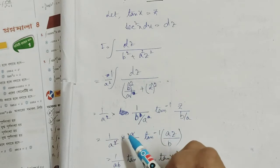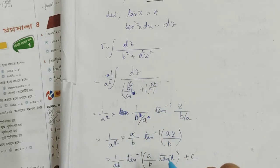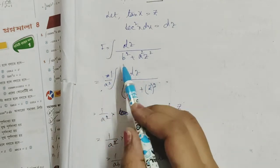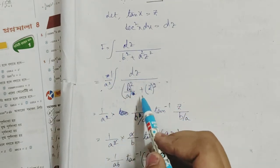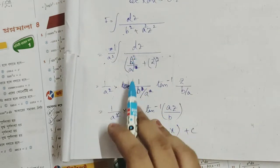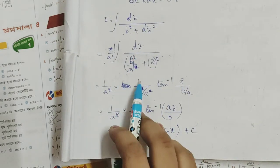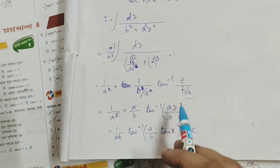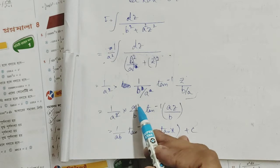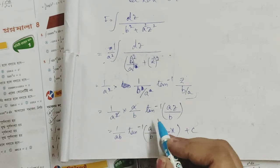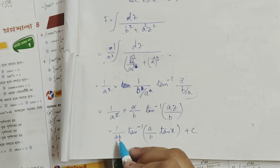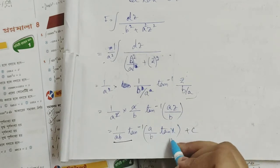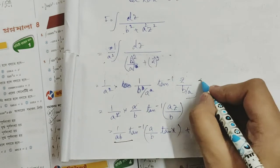The s squared and this square form is very common. This is 1 by s squared, and b by a squared, and this is called z squared again. We have 1 by a, meaning a by b, and tan inverse z divided by b by a. So the result is 1 by AB times tan inverse (a by b times z), where z equals tan x, plus constant C.